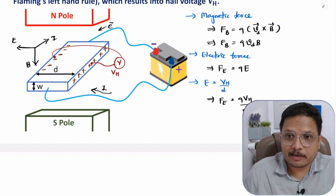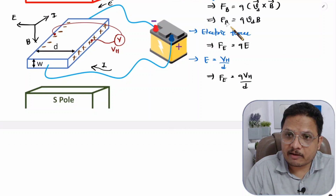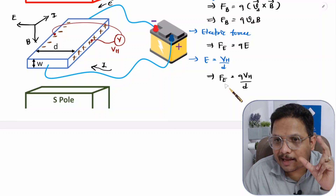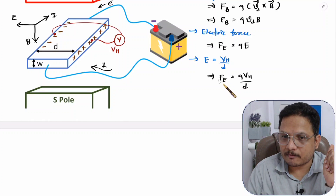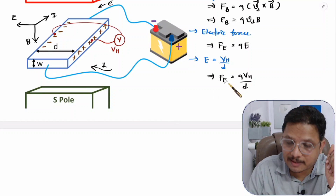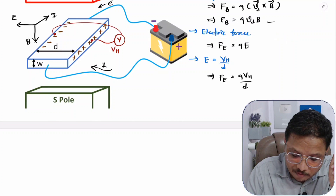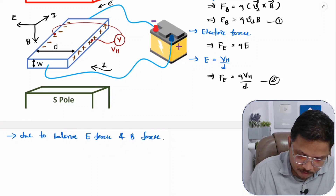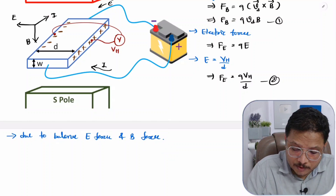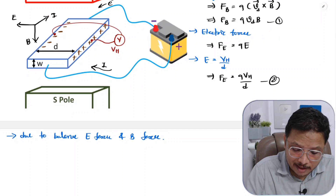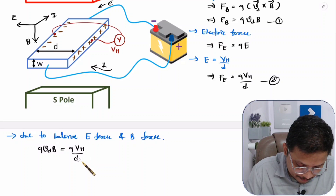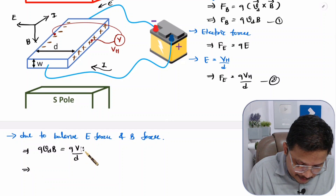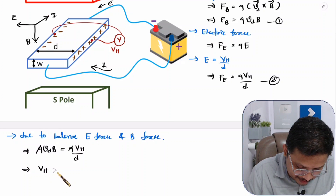Because of the magnetic field, an induced electric field is generated, and the magnetic force balances the electric force. Setting equation one (magnetic force) equal to equation two (electric force): q times vd times B equals q times Vh divided by d. The q cancels, giving Hall voltage Vh equals drift velocity vd times magnetic field B times distance d.